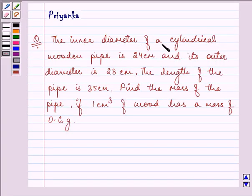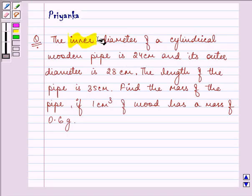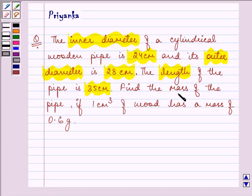The question says the inner diameter of a cylindrical wooden pipe is 24 cm and its outer diameter is 28 cm. The length of the pipe is 35 cm. Find the mass of the pipe if 1 cm cube of wood has a mass of 0.6 grams.